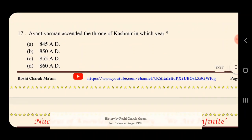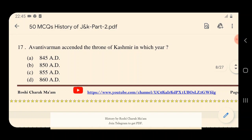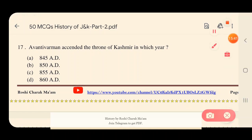Question 17: Avantivarman ascended the throne of Kashmir in which year? Options: A) 845 AD, B) 850 AD, C) 855 AD, D) 860 AD. The answer is C — 855 AD. Avantivarman ascended the throne of Kashmir in 855 AD.